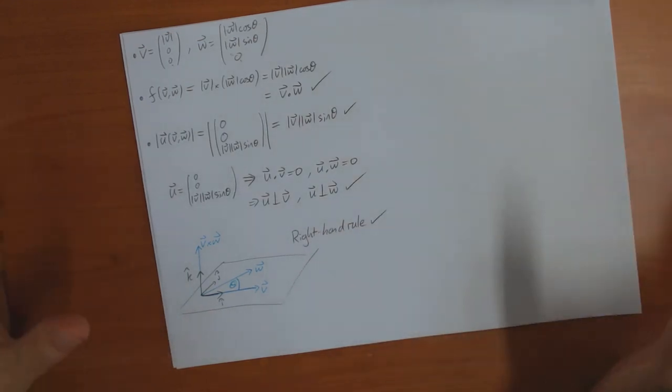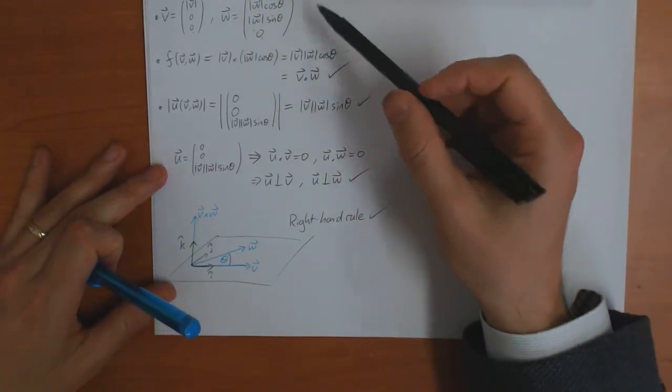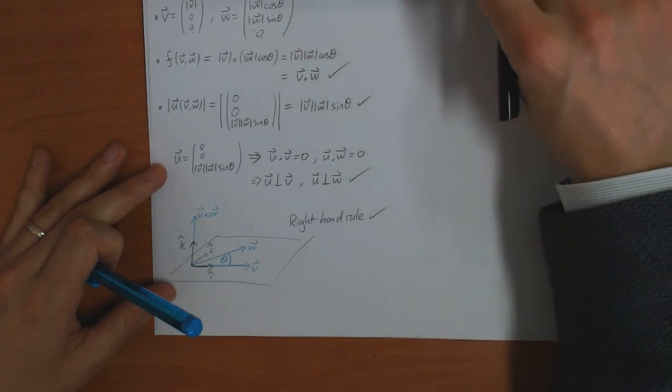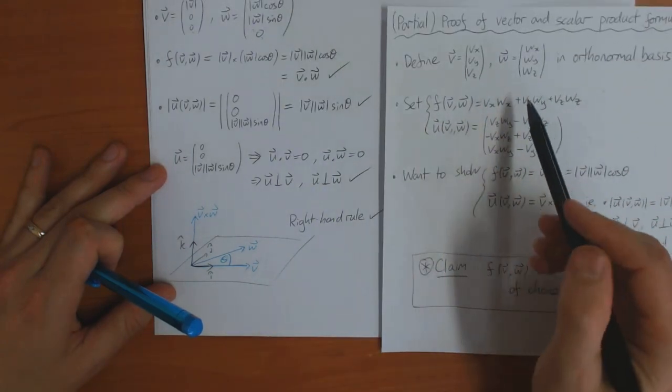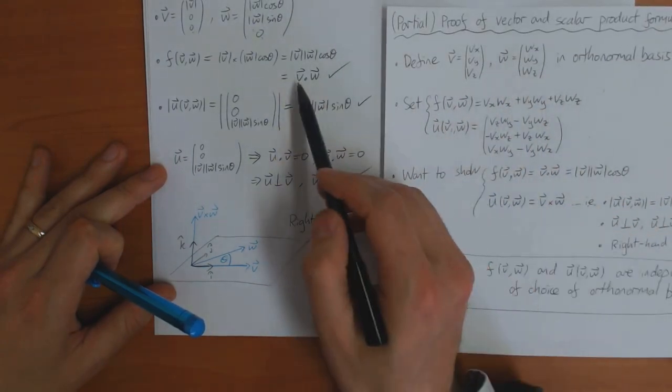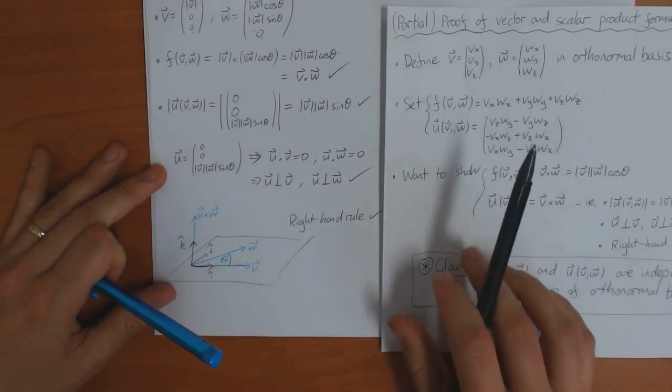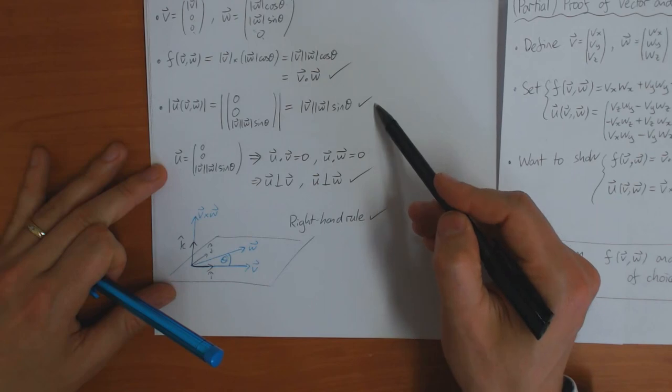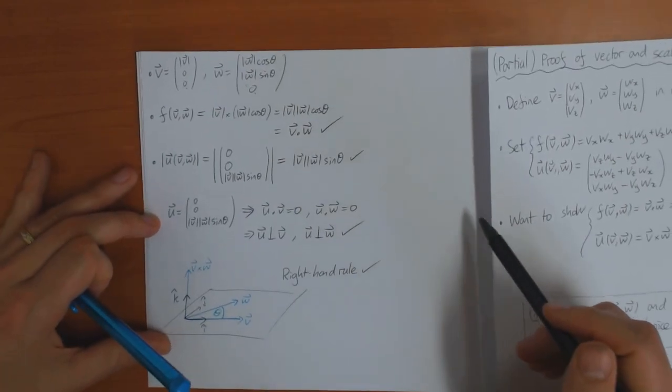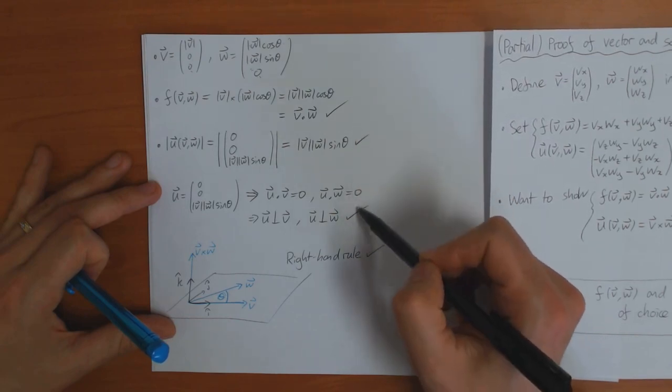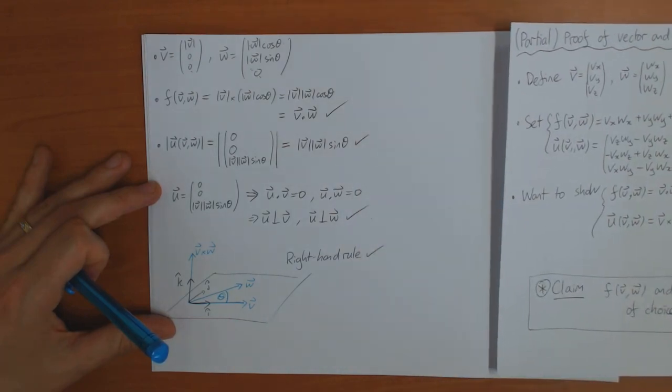Okay. So that completes the proof. We've checked that this function which was vx wx plus vy wy plus vz wz is equal to the scalar product, and we've checked that this vector function here is equal to the vector product by checking it satisfies the three definition properties of the vector product.